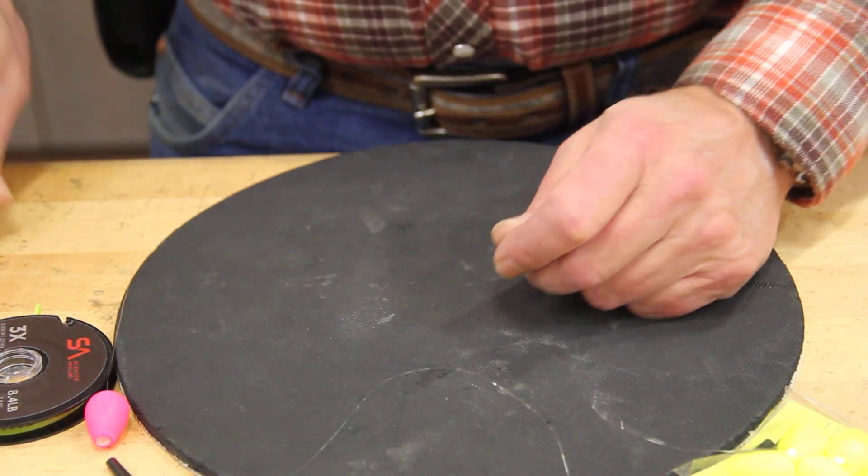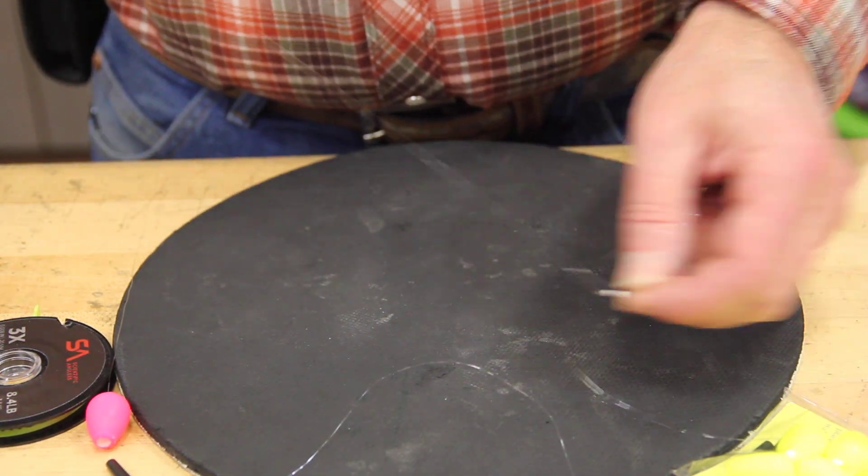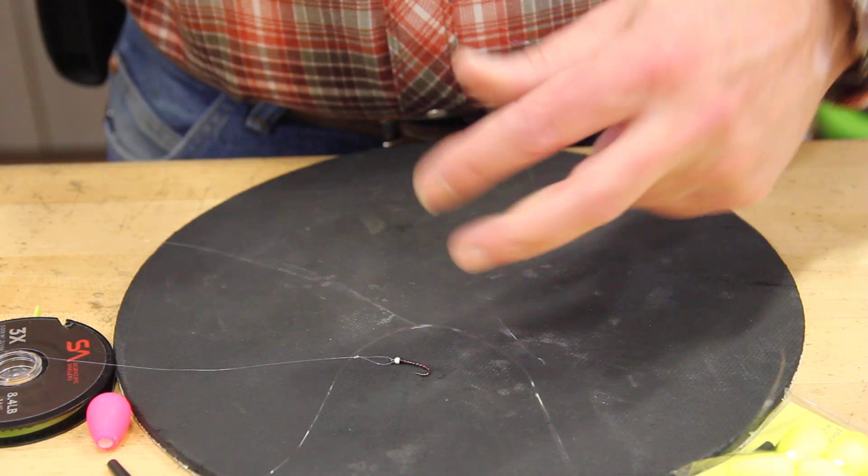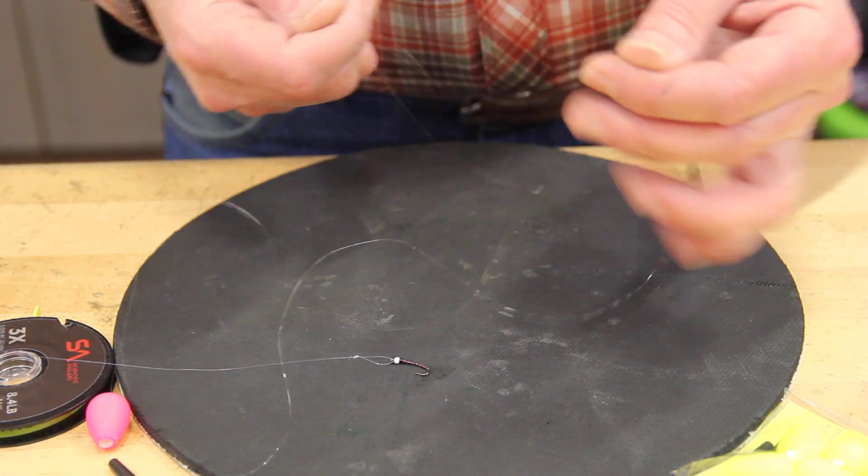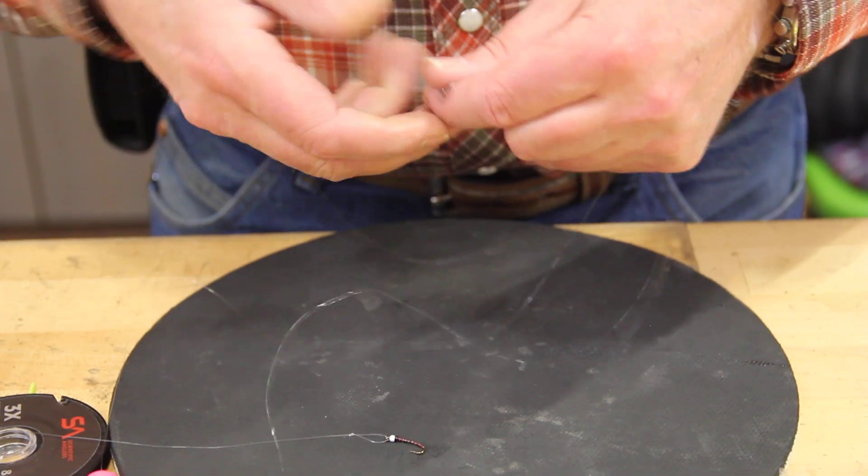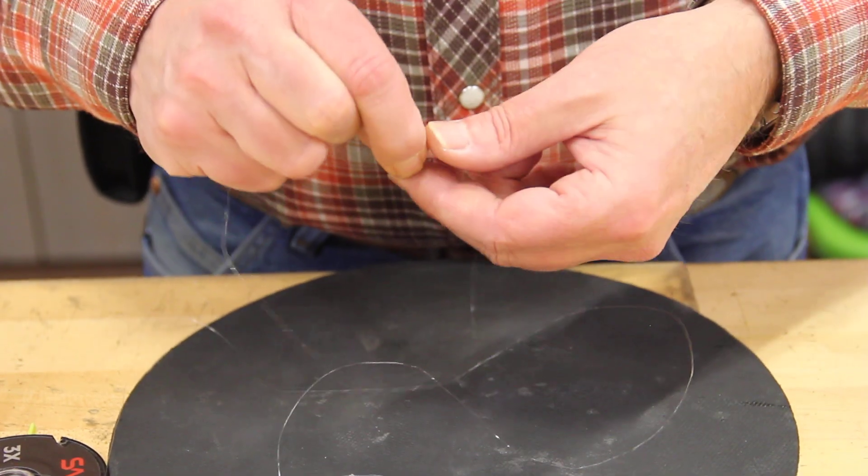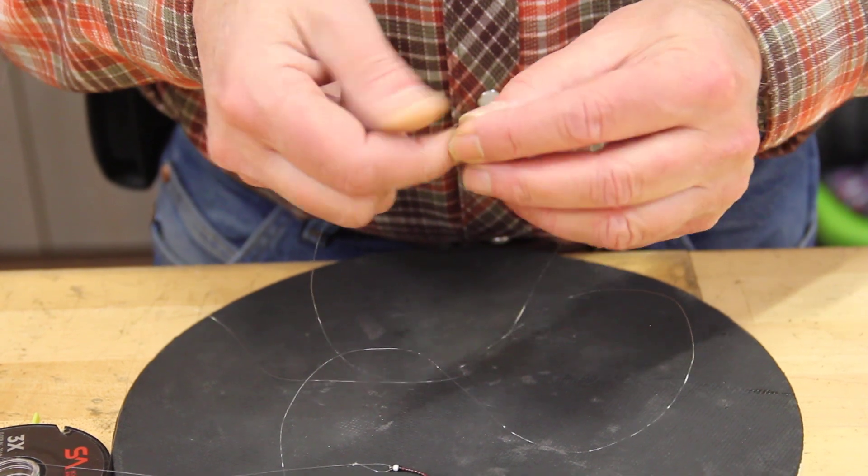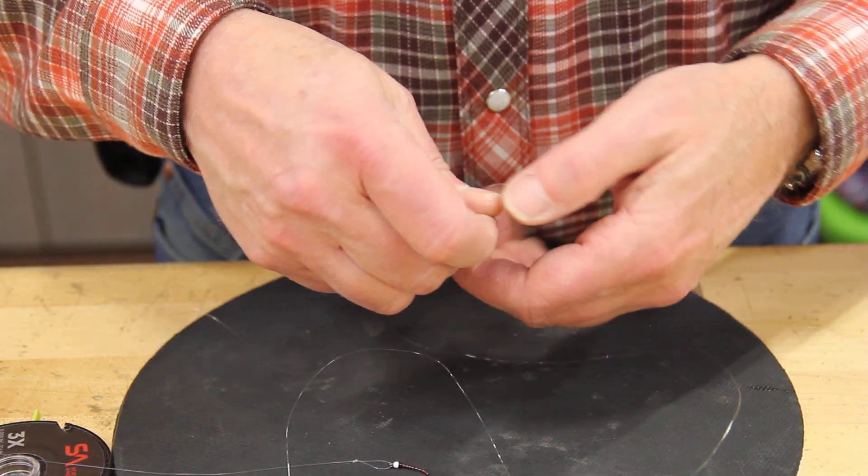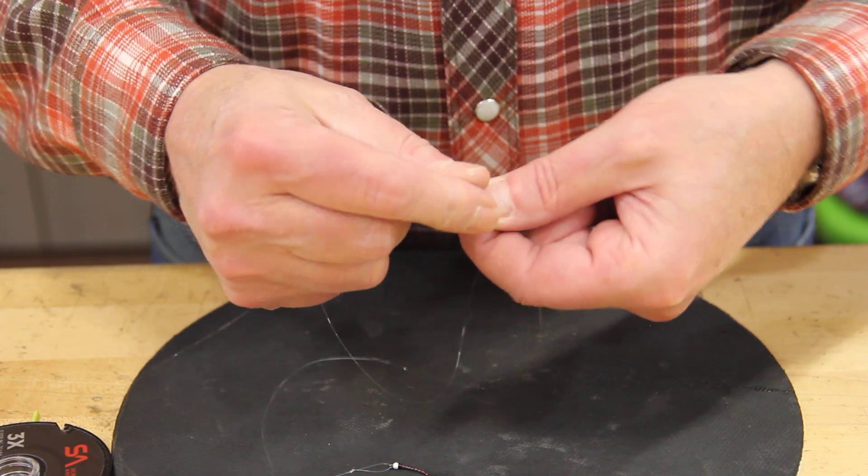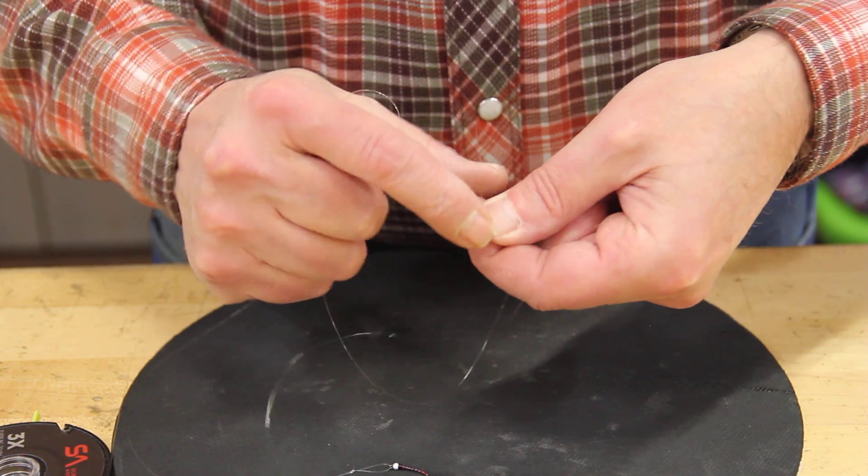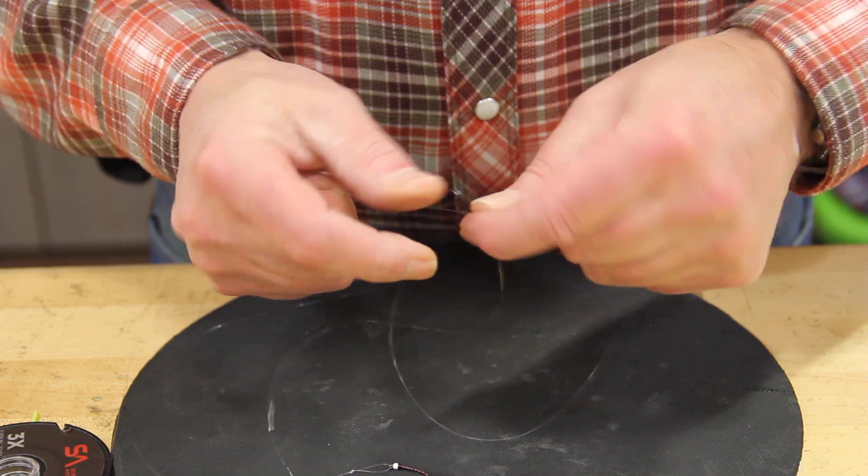Next thing we do is, and you wonder why I'm using a little swivel. I'm going to show you that in a minute. The type of knot you're going to use doesn't have to be anything too fancy, just a simple clinch knot. It doesn't even have to be an improved clinch knot. About seven to eight turns.